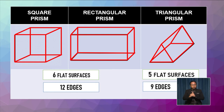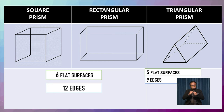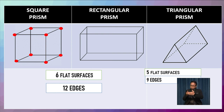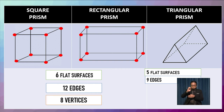Now we will count the number of vertices for each prism. A square prism has 8 vertices. A rectangular prism also has 8 vertices — so these two prisms both have eight vertices. Next, let us count the number of vertices of the triangular prism.